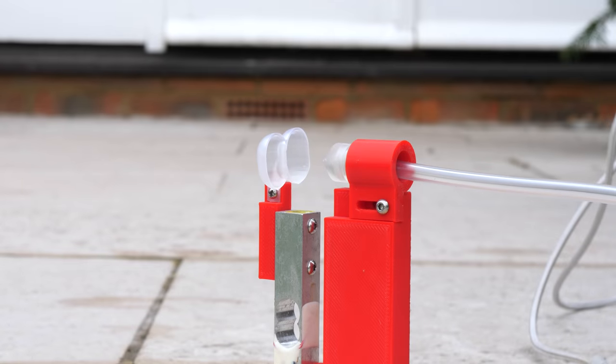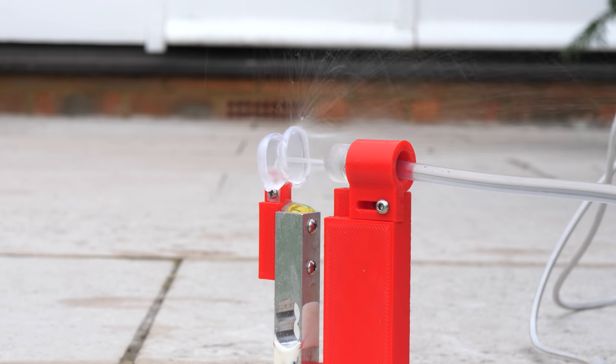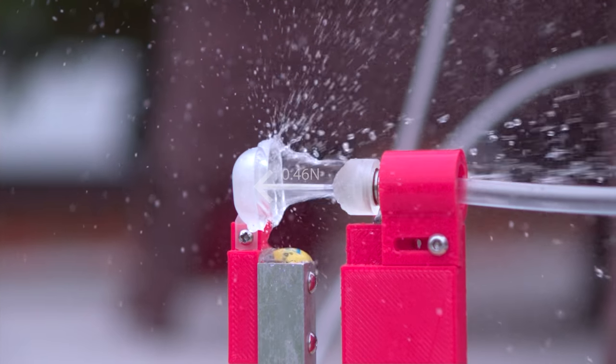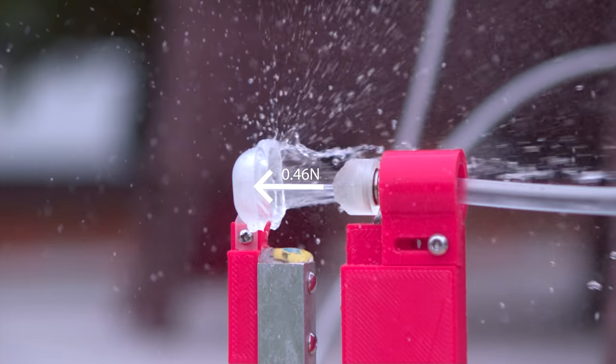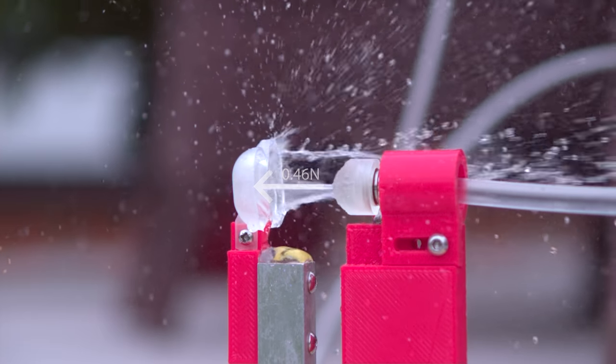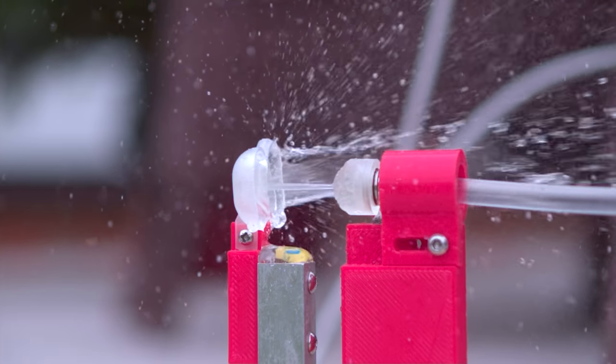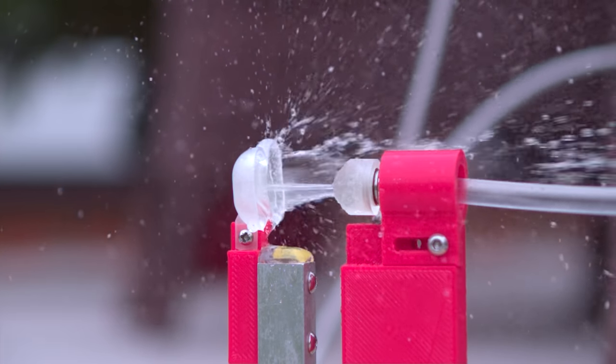I built a small test rig which attached a prototype Pelton bucket to a load cell and held it in front of a high speed jet of water. With a peak force of 0.46 newtons at 4 bar of pressure, the performance wasn't looking very promising and I also realized how difficult it is to split a one millimeter jet of water down the center.